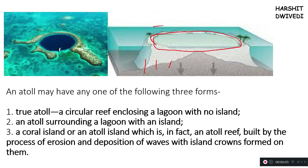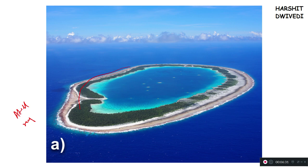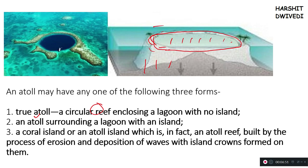Three types of atolls will form. First is the true atoll: in this, the circular structure will remain below the water — a circular reef is there, but the corals are not exposed to the surface. There is a circular reef with a lagoon in between. In the second case, this circular red portion will be exposed to the atmosphere, and when exposed it will look like this — the inside reef has been exposed to the air, forming a sort of island with a lot of trees. So basically, a small island has formed because that coral reef has come out of the ocean water.